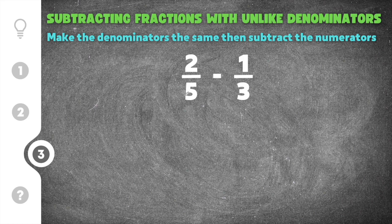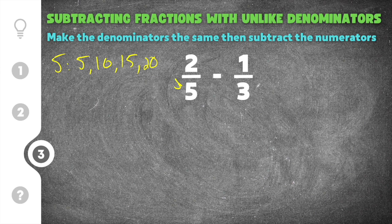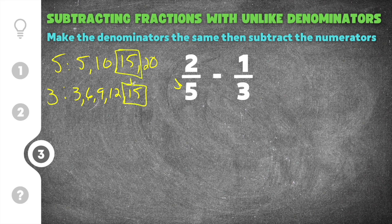Our last practice problem for subtracting fractions with unlike denominators gives us 2 fifths minus 1 third. In order to subtract these, they have to have the same denominator. I'm going to take the first denominator, which is 5, and list its multiples: 5, 10, 15, 20. And for 3: 3, 6, 9, 12, 15. I'll stop at 15 because the least common multiple for both 5 and 3 is 15.